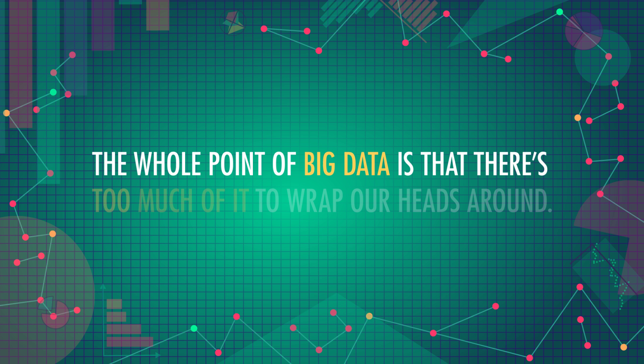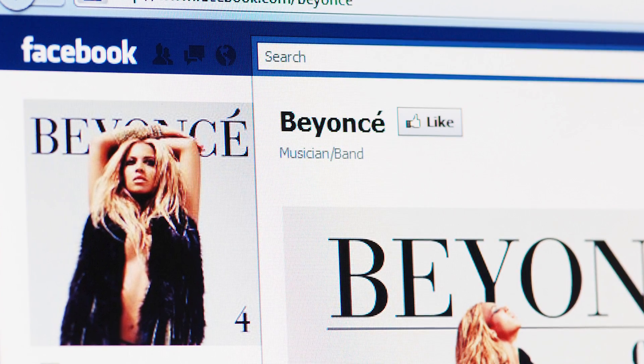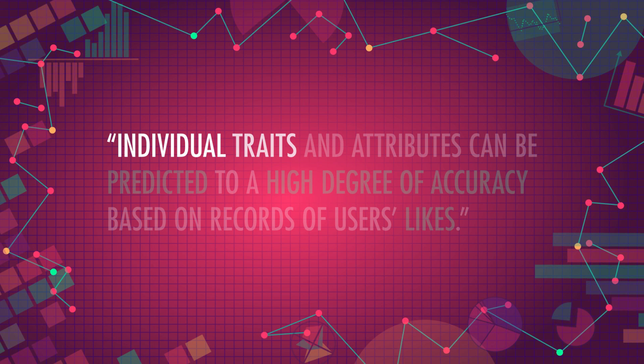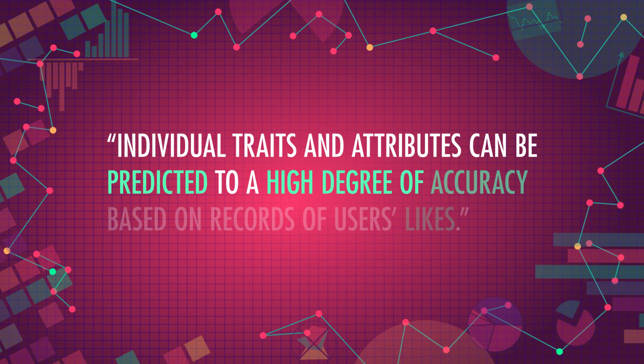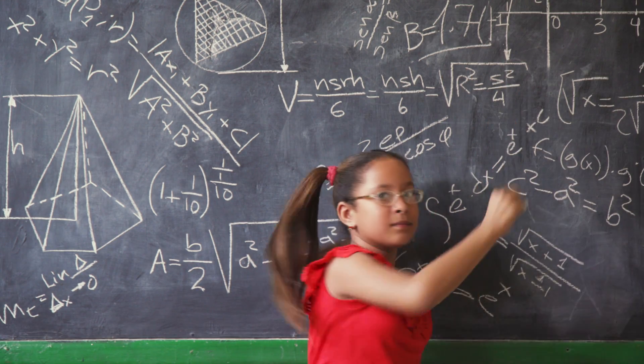The whole point of big data is that there's too much of it to wrap our heads around. So let's take one tiny aspect of it — Facebook likes. For years, those likes seemed pretty useless. But that information is more revealing than you might think. In 2013, the Proceedings of the National Academy of Sciences published a study out of the Psychometric Center at Cambridge University. The participants were around 58,500 Facebook users who took a personality survey on the researchers' app, then requested permission to view the users' likes. They found individual traits and attributes can be predicted to a high degree of accuracy based on records of users' likes. Liking thunderstorms, science, and curly fries were signs that someone was highly intelligent.